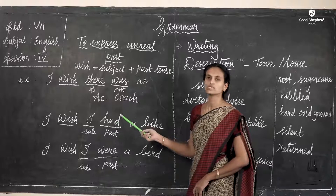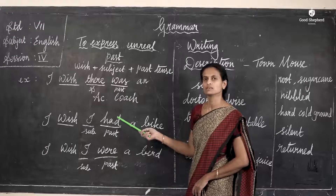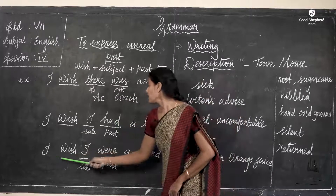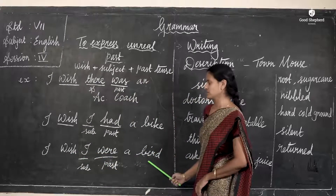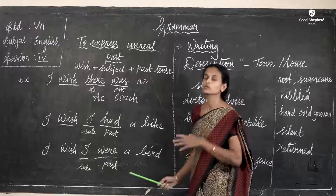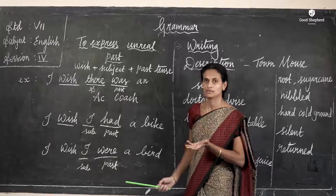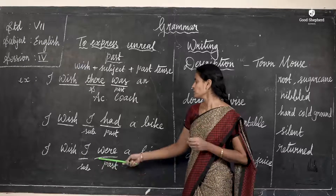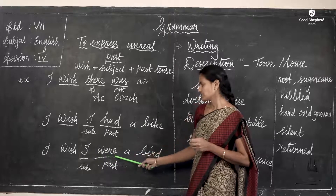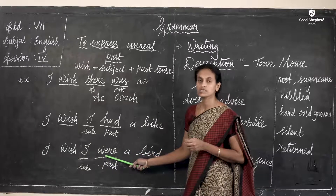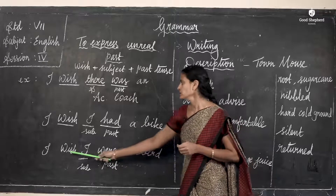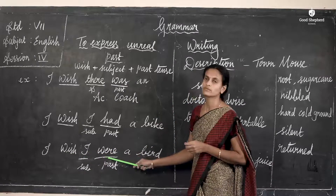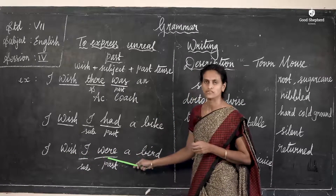The present form of 'had' is 'has'. Another example: 'I wish I were a bird.' You want to fly — if you were a bird, you would fly. Here 'were' is the past tense of 'are'. So: wish, then the subject, then the past form.